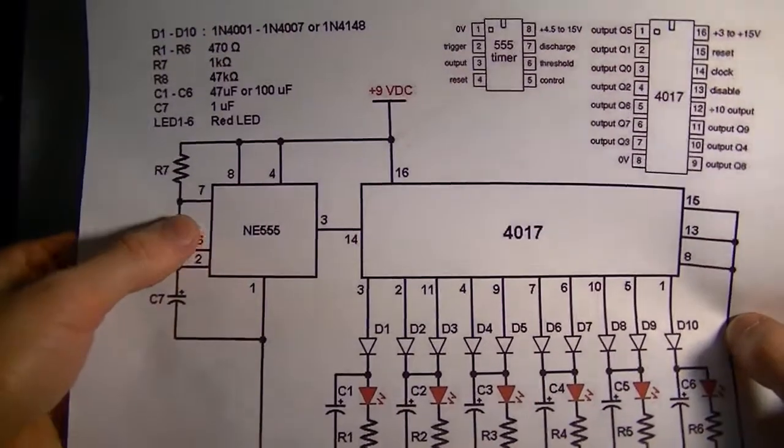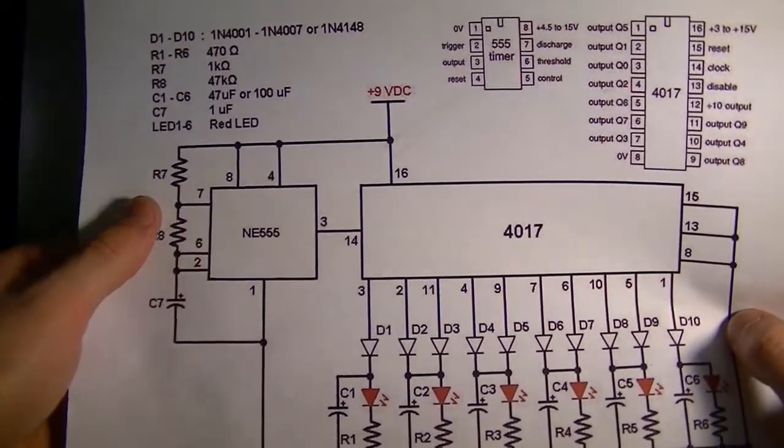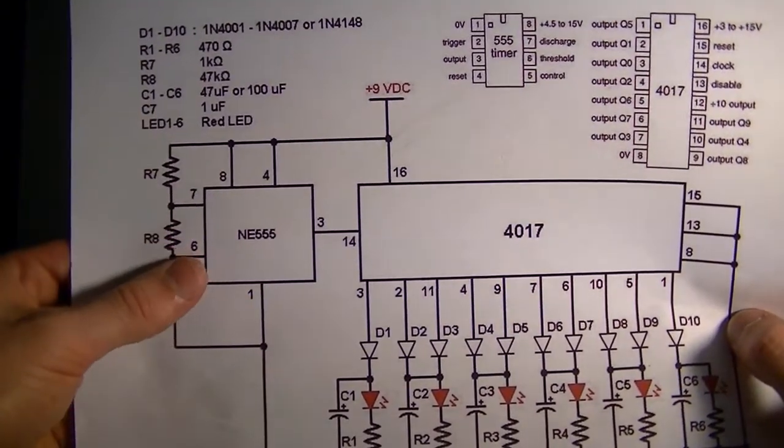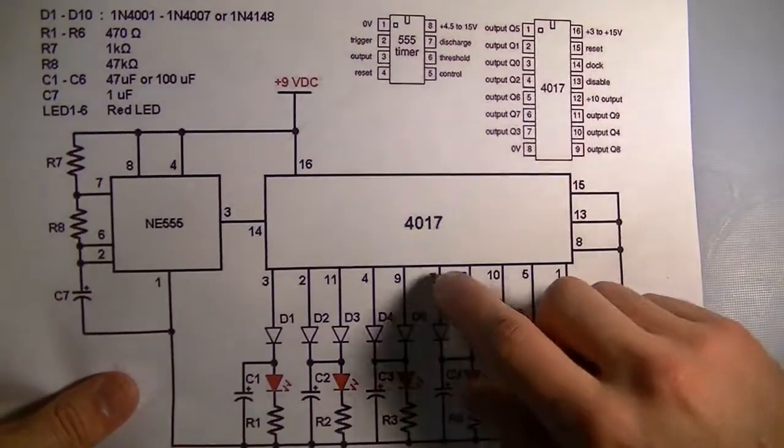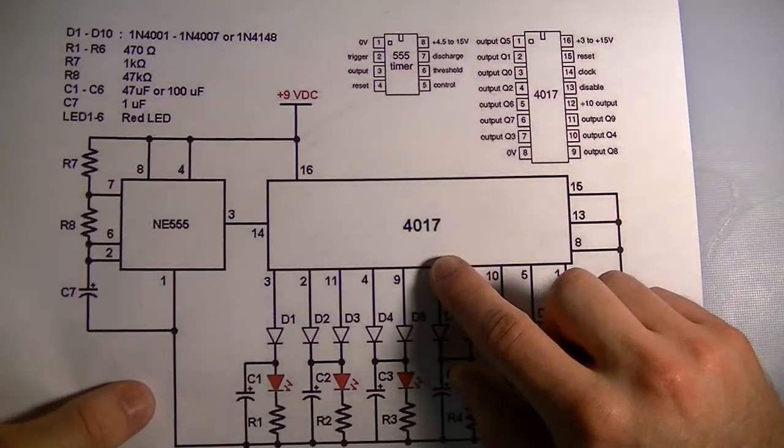The circuit consists of a 555 timer IC configured in the astable mode of operation that will produce a clock signal to clock our CMOS 4017 decade counter.